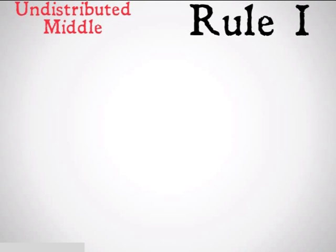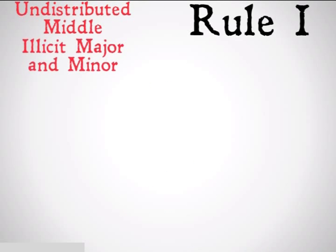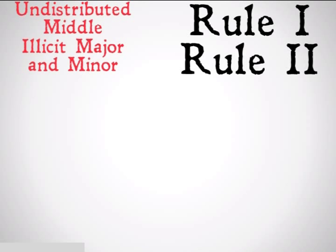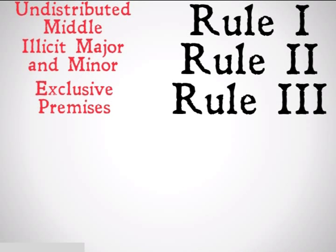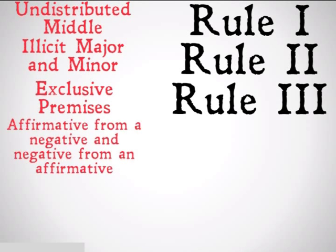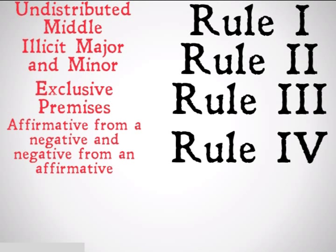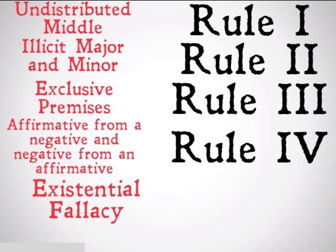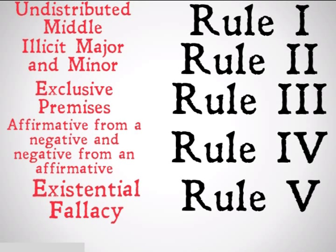Undistributed middle is the fallacy that goes with rule 1. Illicit major and minor is the fallacy that goes with rule 2. Exclusive premises is the fallacy that goes with rule 3. Affirmative from a negative and negative from an affirmative are the fallacies that go with rule 4. And, of course, the existential fallacy goes with rule 5.